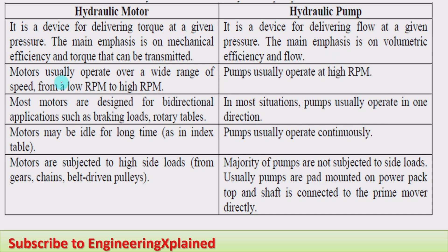Motors usually operate over a wide range of speeds, from low RPM to high RPM — the speed is variable for the hydraulic motor. Pumps, on the other hand, usually operate at high RPM only.